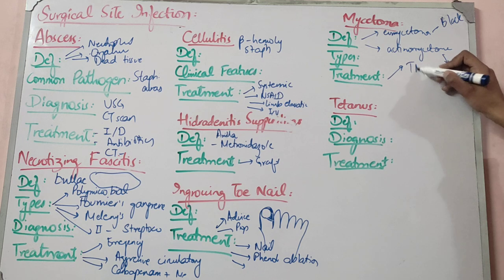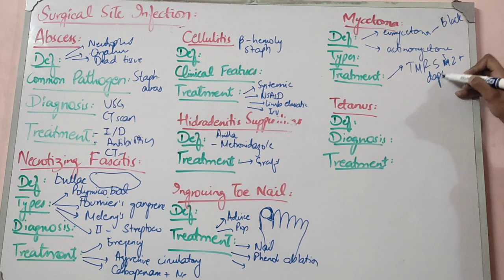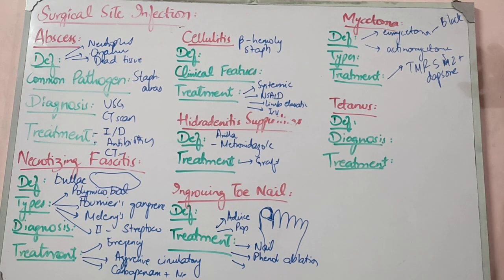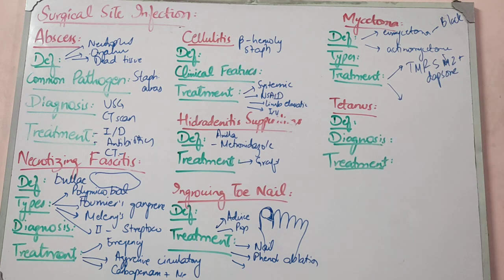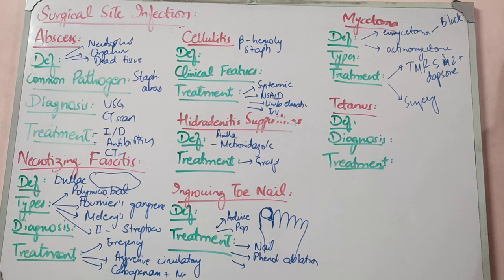For bacterial mycetoma, give Trimethoprim-Sulfamethoxazole (TMP-SMX) plus Dapsone for 5-week cycles, repeated for a long treatment course. Hygienic measures are advised. For fungal mycetoma, give anti-fungal treatment and surgical debridement — surgery is recommended along with anti-fungal drugs, and you can cover with a graft.